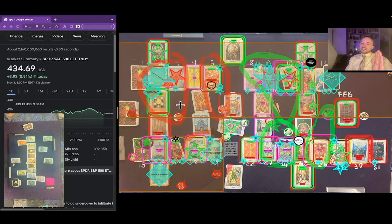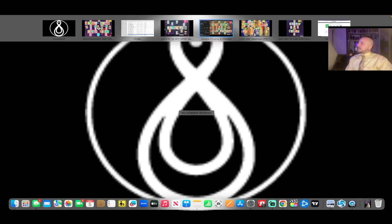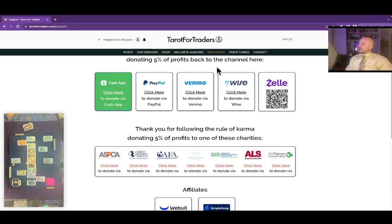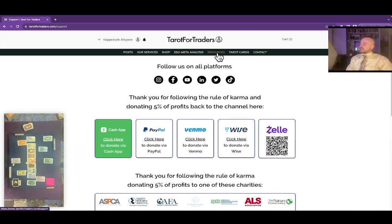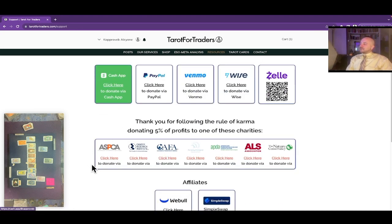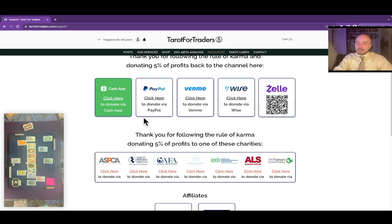I want to make sure everybody's aware the whole purpose of the channel is to follow the rule of karma and transmute competitive energy of the stock market into goodwill. On the resources tab of our website Tarot for Traders, we expect 5% of profits from every profitable trade donated to one of these charities and 5% donated back to the channel, leaving you 90%. As long as you follow those rules, you're an angel investor of the channel, and the universe will send it back tenfold.